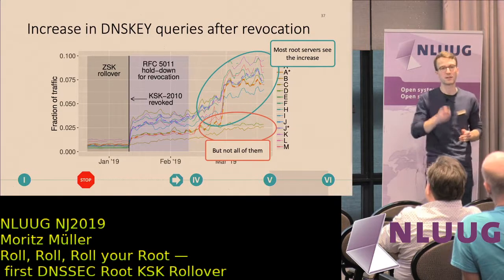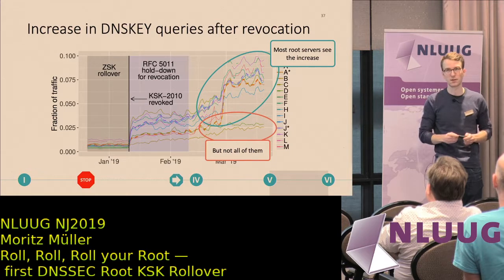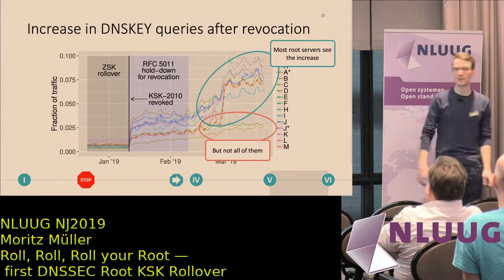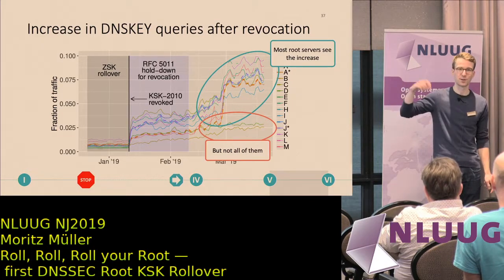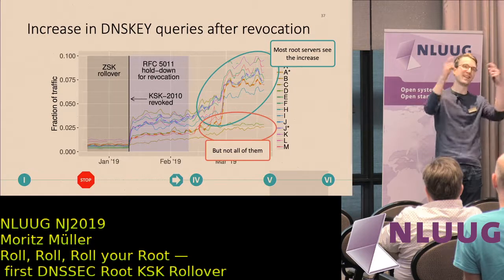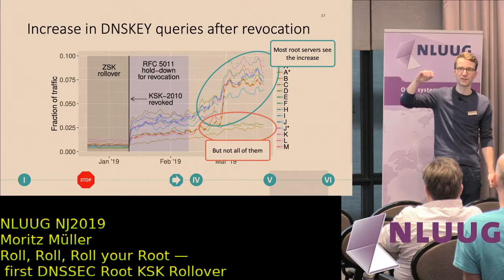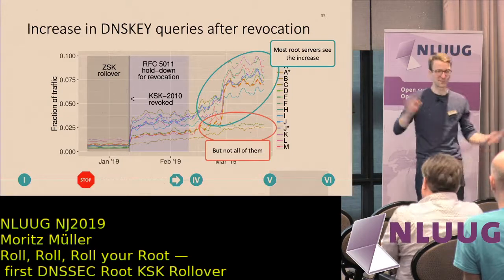A question was asked when signing with KSK 2010 stopped — the answer is October 11th, 2018. To clarify a technical detail left out earlier: in DNSSEC there is a key signing key (KSK) and a zone signing key (ZSK). The ZSK had been rolled multiple times before, but the KSK — which signs the ZSK — was replaced for the very first time on October 11th, when the record set was signed with the new KSK 2017.